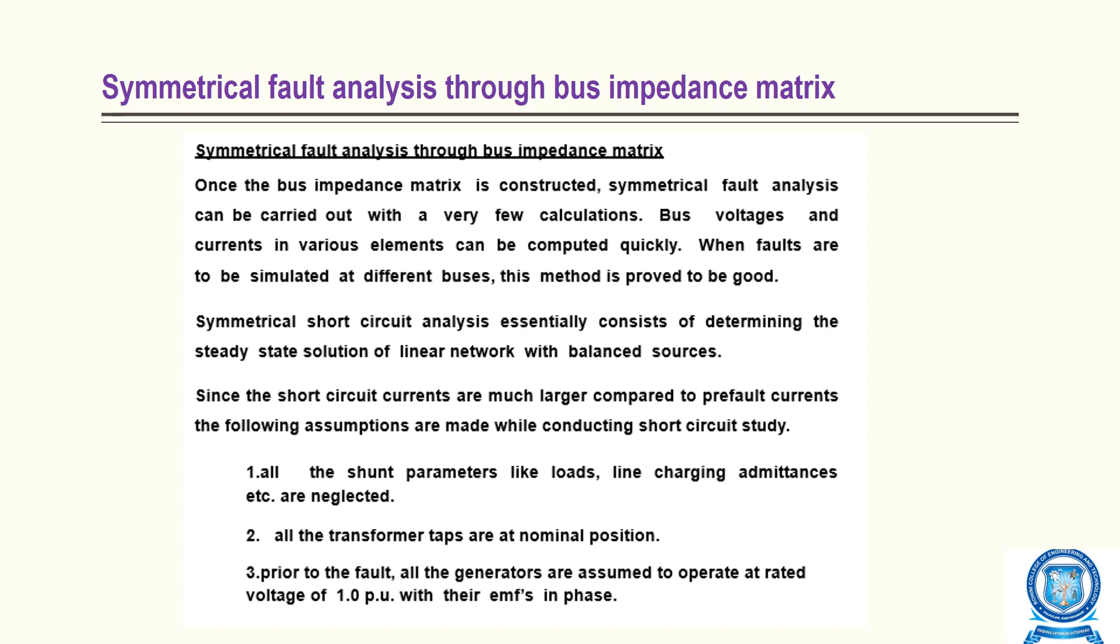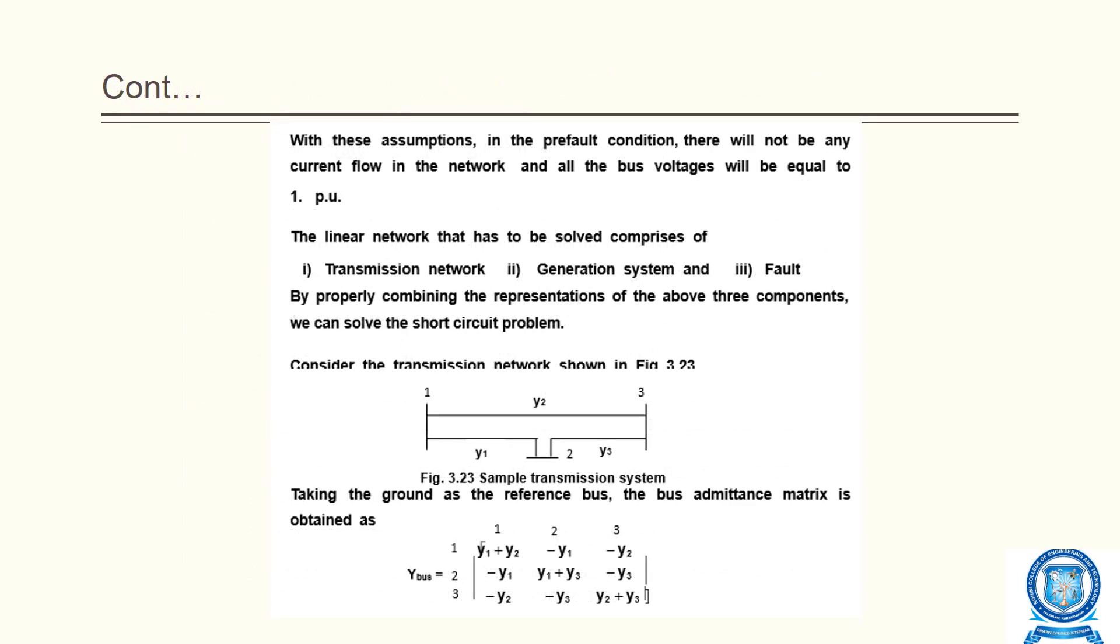Prior to fault, all generators are assumed to operate at rated voltage of 1.0 per unit with their EMFs in phase. With these assumptions in the pre-fault condition, there will be no current flow in the network and all bus voltages are equal to 1.0 per unit. The linear network to be solved comprises transmission network, generation system, and fault. By properly combining the representations of these three components, we can solve the short circuit problem.